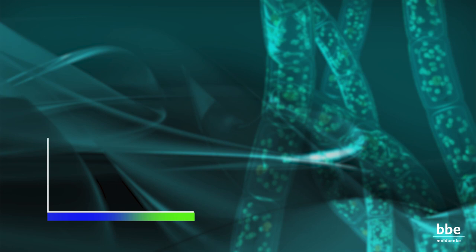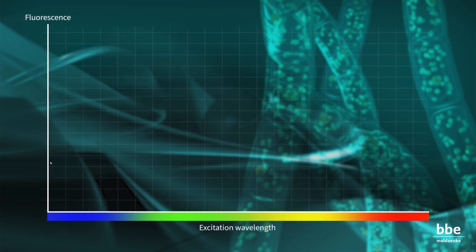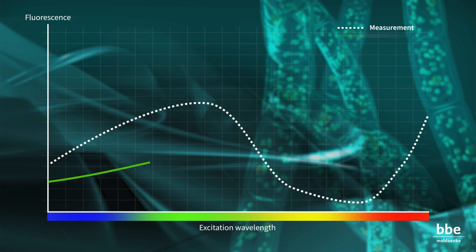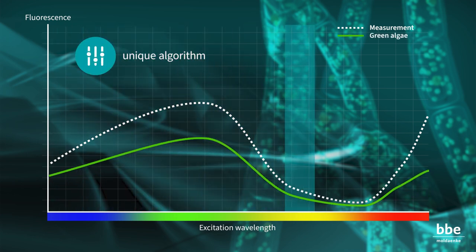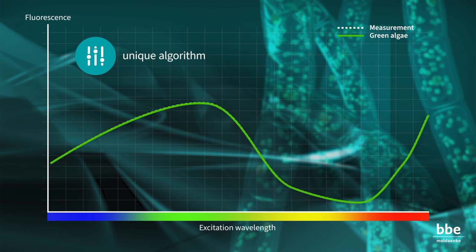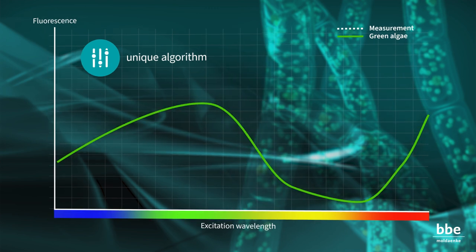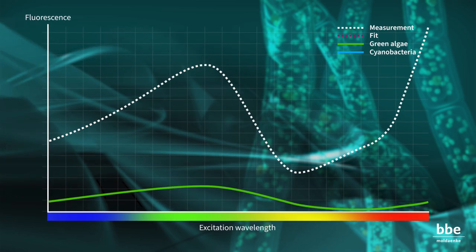Assuming a given concentration of one algae class in the sample, the measured spectrum may look like this. The BBE software, with its unique algorithm, searches for the best fit based on existing norm spectra. Looking at a measurement of a sample with two algal groups, the fluorescence spectrum may look like this.